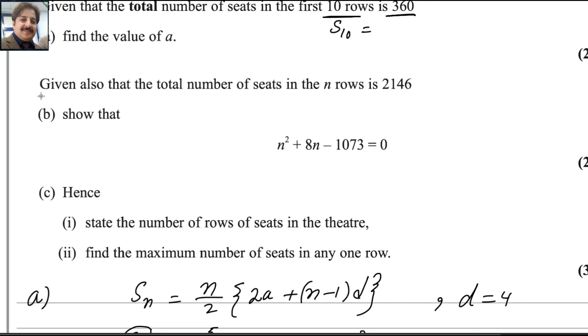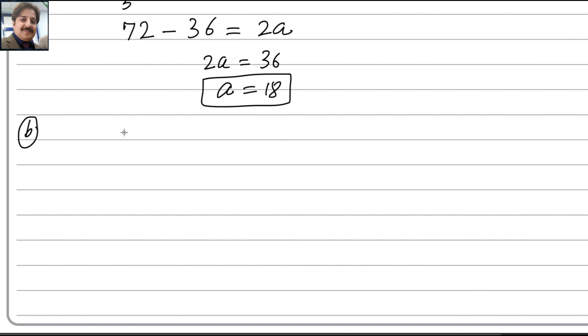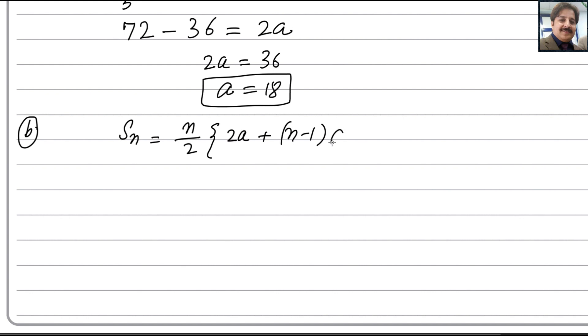For second part, given also that the total number of seats in n rows, so these are for n rows, Sₙ. So Sₙ equals 2146. Show that n² + 8n - 1073 = 0. Now we have this information for second part. Still, we will use the same formula for sum that is n/2. Here, 2a + (n-1)d. And this time, we have the formula for Sₙ. Value for Sₙ that is 2146.